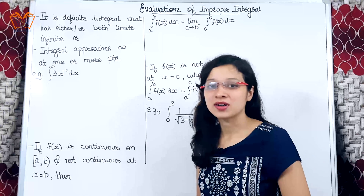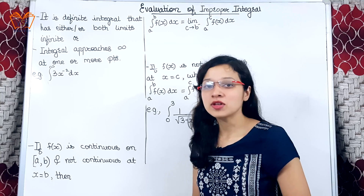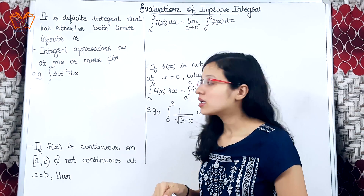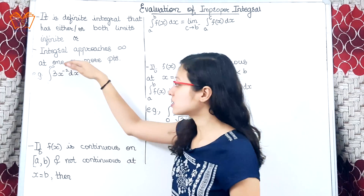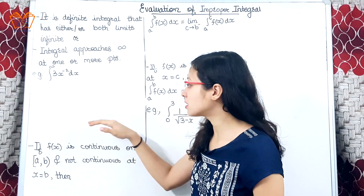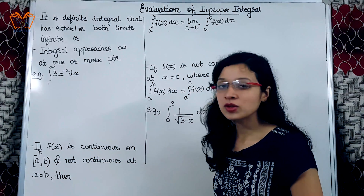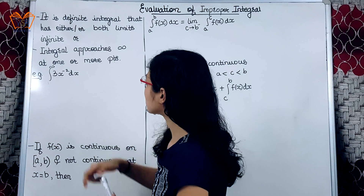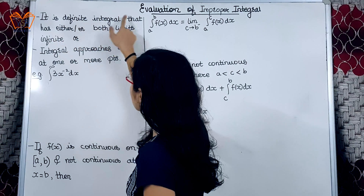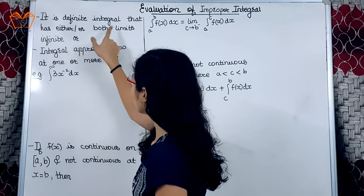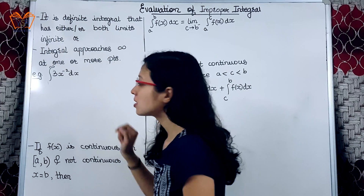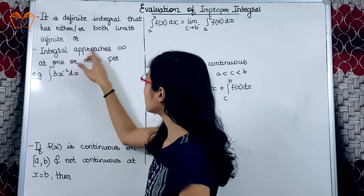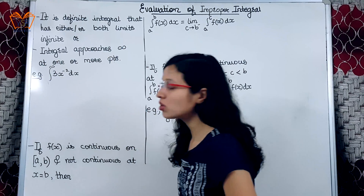Hey guys, I am Suprabah. In this video, we will move on to the next point, that is evaluation of improper integrals. Today we will first understand the definition of improper integral through an example and then move on to other cases. The definition says it is a definite integral that has either or both limits infinite, or the integrand approaches infinity at one or more points.